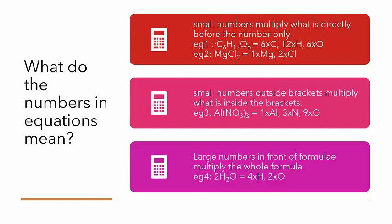So if we have a formula like glucose, for example — C6H12O6 — that tells us that we have 6 lots of carbon, 12 lots of hydrogen, and 6 lots of oxygen. Similarly, if we've got a formula such as magnesium chloride, that tells us that there's 1 lot of magnesium and 2 lots of chlorine.